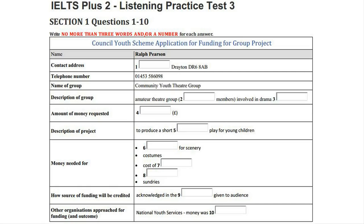The first part asks for the main contact person. Can I put you there? Sure. Right, so that's Ralph Pearson. The man's name is Ralph Pearson, so Ralph Pearson has been written in the space. Now we shall begin. You should answer the questions as you listen because you will not hear the recording a second time. Listen carefully and answer questions one to three.